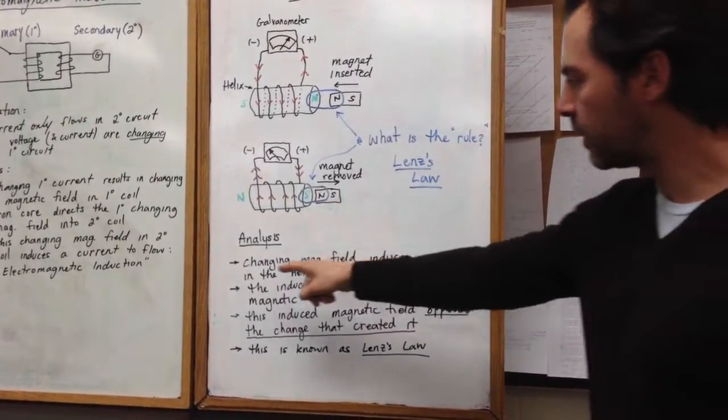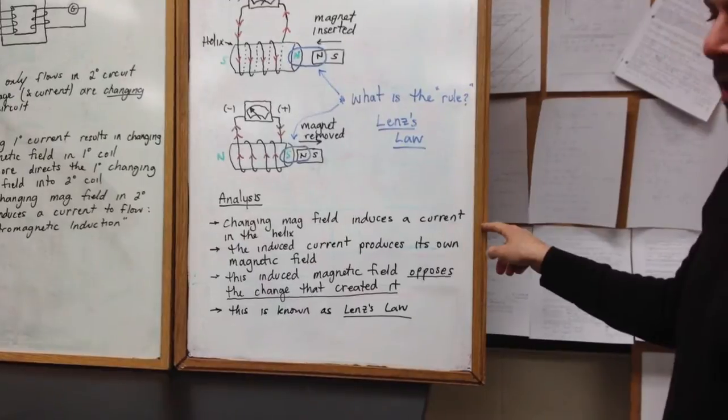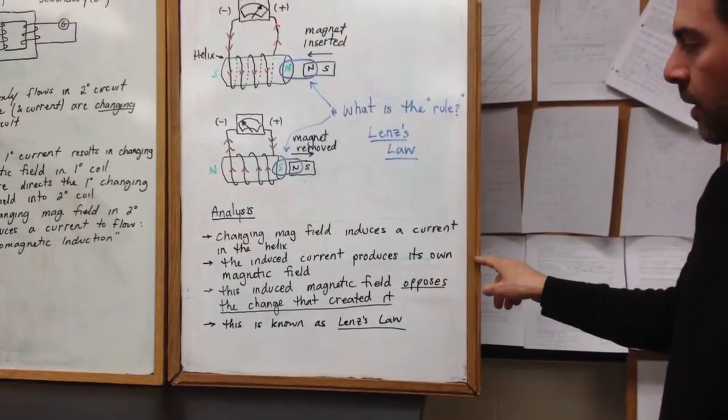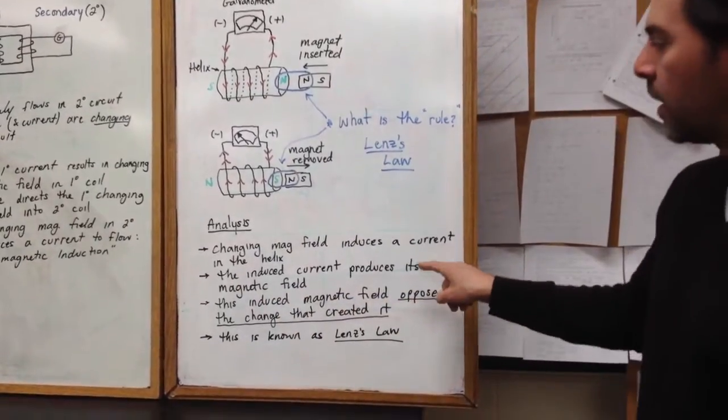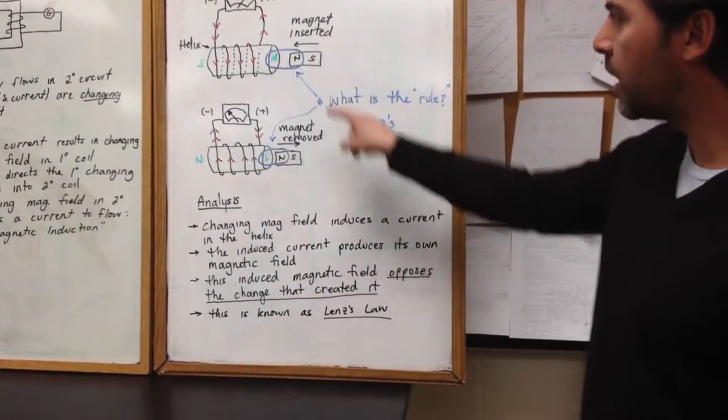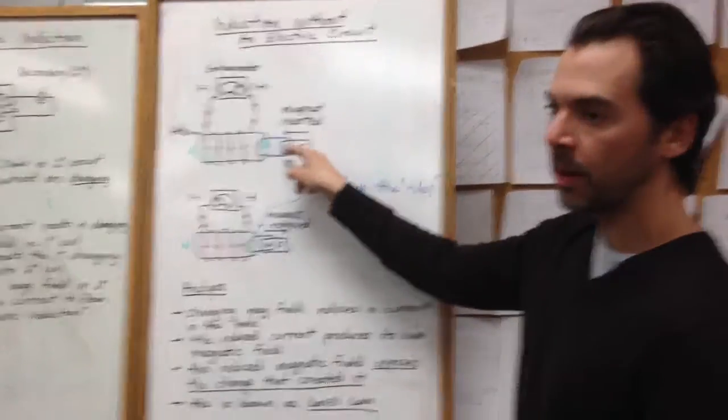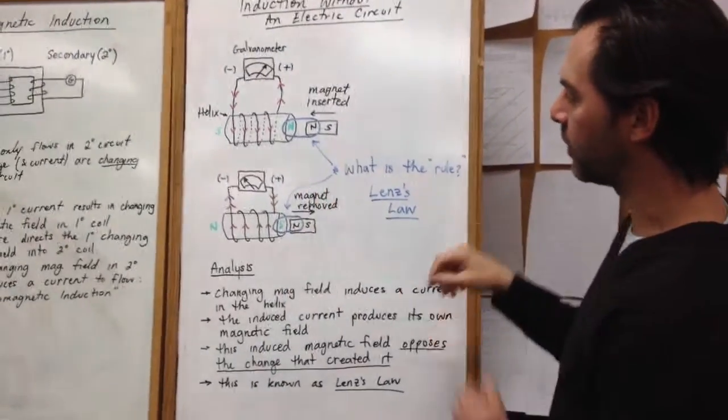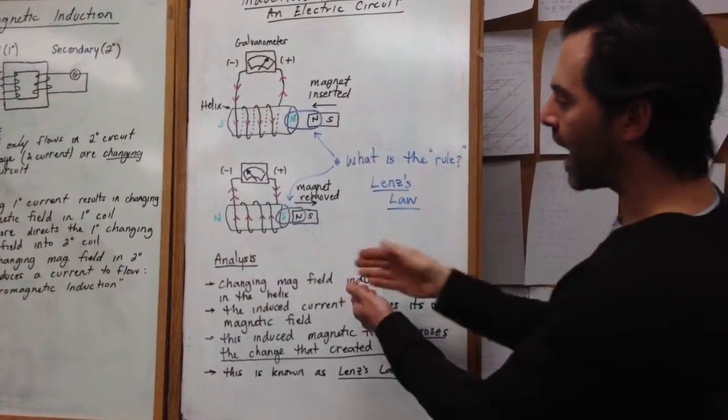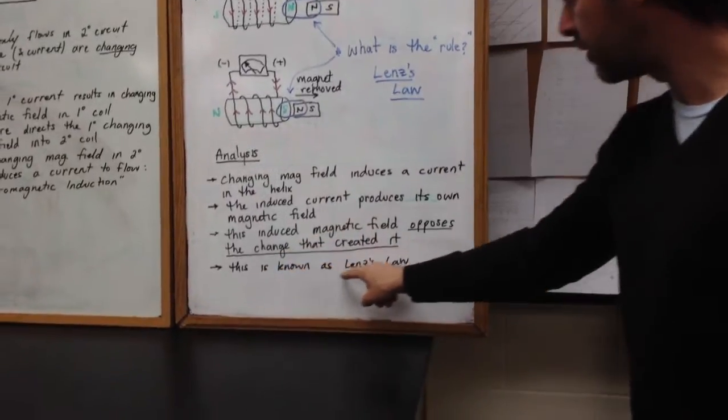So what is the rule for predicting what direction the current will flow? That's what we call Lenz's Law. Let's have a look at the analysis and the conclusion. A changing magnetic field induces a current in the helix, not just a magnetic field. It's got to be changing. The induced current produces its own magnetic field, right hand rule number two. And this induced magnetic field, what is it doing? It is opposing the change that creates it. When a north was inserted, we got a north produced. That shows repulsion, which is opposing the change. When the north was removed, a south was what resulted, which attracts the north back in, once again opposing the change that is creating it. This is known as Lenz's Law.